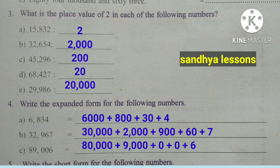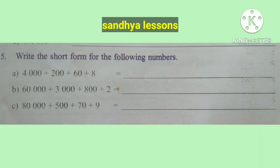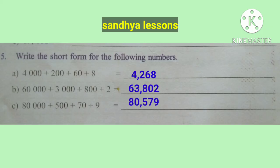Fourth question: write the expanded form. 6,834 = 6,000 + 800 + 30 + 4. 32,967 = 30,000 + 2,000 + 900 + 60 + 7. 89,006 = 80,000 + 9,000 + 0 + 0 + 6. Fifth question: write the short form. 4,000 + 200 + 60 + 8 = 4,268. 60,000 + 3,000 + 800 + 2 = 63,802. 80,000 + 500 + 70 + 9 = 80,579.